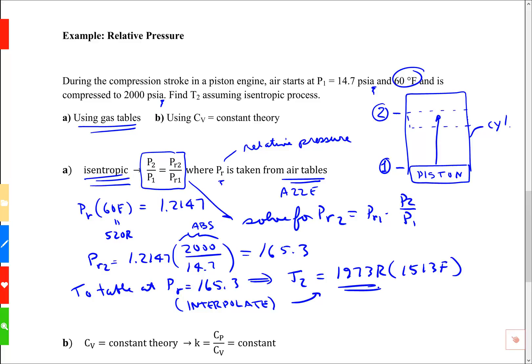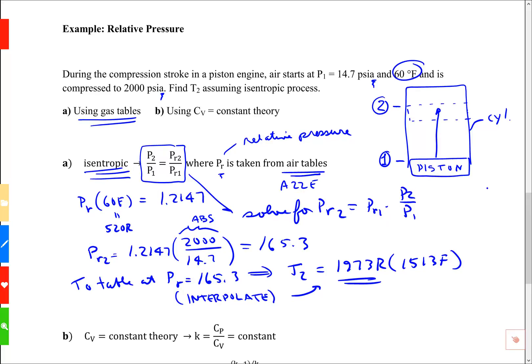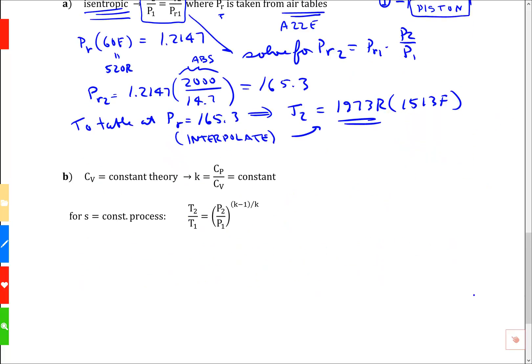Part B, we're asked to find the final temperature using CV equals constant theory. In CV equals constant theory, we use a quantity called the specific heat ratio. For air at 60 Fahrenheit, it's 1.4. Let's grab that value and run with it.